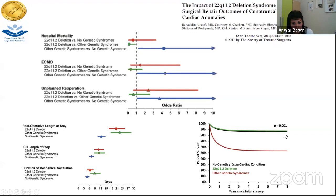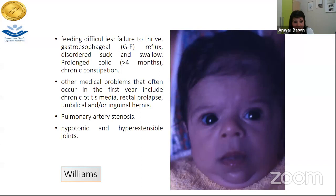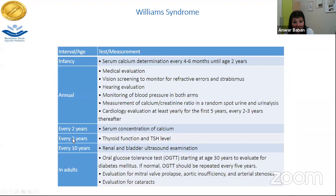Another microdeletion syndrome is often characterized by feeding difficulties, failure to thrive, reflux, prolonged colic, and other problems in the first year of life including chronic otitis media, rectal prolapse, or hernias. In this patient we see pulmonary artery stenosis, hypotonia, and hyperextensible joints — this is Williams syndrome. It is a rare condition (one in 20,000–50,000), caused by microdeletion of the long arm of chromosome 7 including the elastin gene.